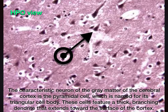The characteristic neuron of the gray matter of the cerebral cortex is the pyramidal cell, which is named for its triangular cell body. These cells feature a thick branching dendrite that extends towards the surface of the cortex.